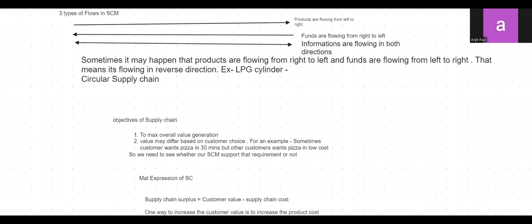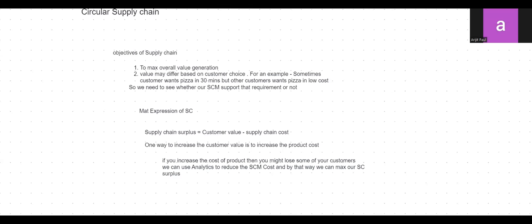We need to see whether our supply chain supports that customer requirement, since customer value differs from customer to customer. The mathematical expression for supply chain surplus — which is the supply chain profit — is: Supply Chain Surplus = Customer Value minus Supply Chain Cost.